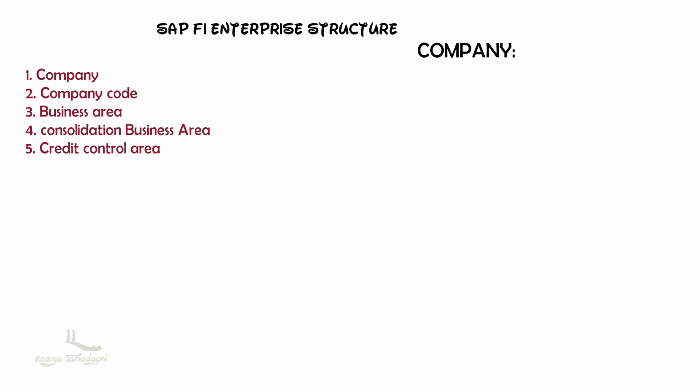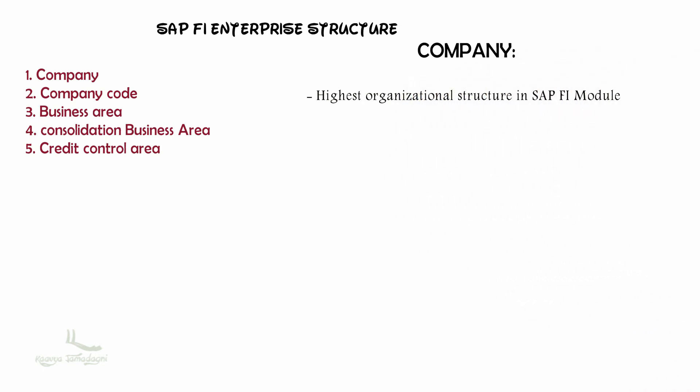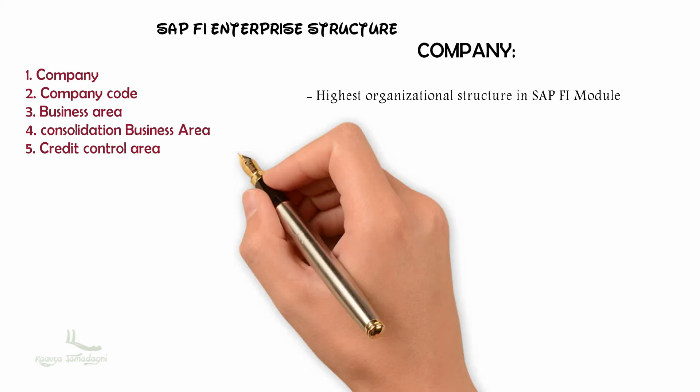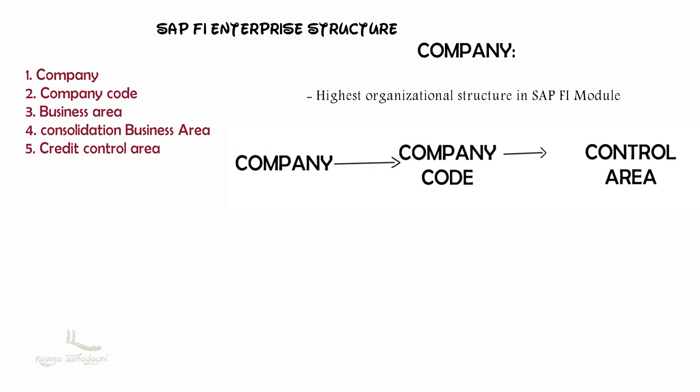Company is the highest organizational structure in SAP FI module. It is an organizational unit used to generate the financial statements of the several company codes under it — in other words, it is used in legal consolidation for all the company codes assigned to it. You may wonder why Company was not shown in the previous diagram. In SAP, we assign companies to company codes, and then these company codes are assigned to the controlling area, so that all can be linked together.